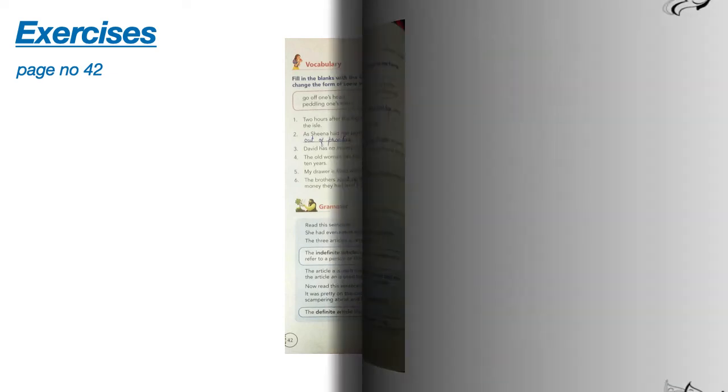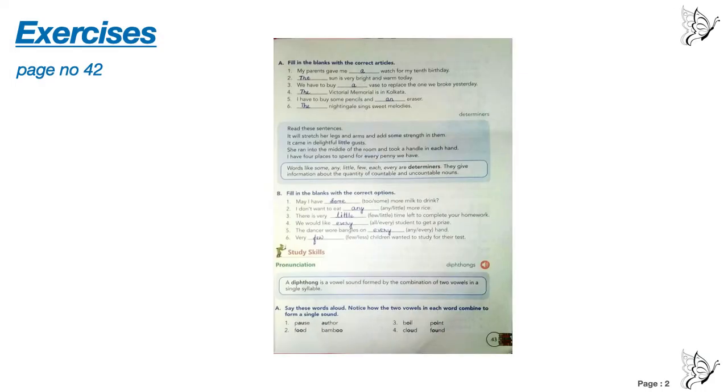Take out page number 43. In page number 43, we have grammar portion. Question number A, fill in the blanks with the correct article. Now, we use A before a consonant. We use N before a vowel. And the is used before a particular person or thing.